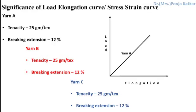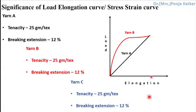This is Yarn A — its behavior from zero load right till the breaking point. This is Yarn B, again from zero load to the breaking point, and this is Yarn C. Now, looking at these three curves, is it possible to use these three yarns for the same application? Obviously, the answer is no.